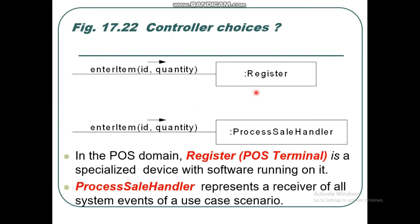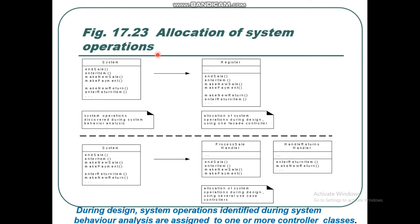Next, controller choices. In the POS domain, register is a specialized device with software running on it. The process sale handler represents a receiver that receives all the system events. This is the option to satisfy allocation of system operations. System operations are discovered during system behavior analysis and are allocated to a register class — our controller class — using one facade controller.